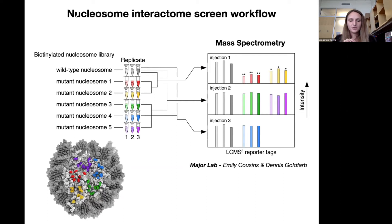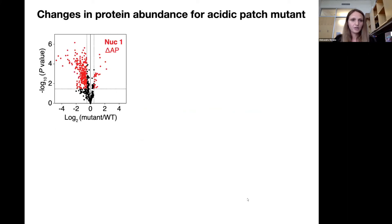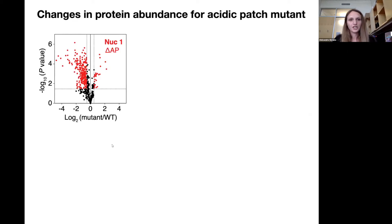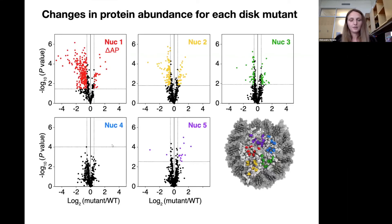Because there only exist 11 unique TMT tags and we had 18 samples, we had to divide them between three groups and label them separately, and then run each of these groups separately on the mass spectrometer. To be able to directly compare protein abundance between each of the nucleosome pull-downs, we included wild-type triplicate in each of the injections. To analyze this data, we compared the protein abundance between wild-type and mutant nucleosomes and plotted these differences on volcano plots. The x-axis represents log difference, the y-axis represents significance of that difference. This is the 5% false discovery rate threshold, and the vertical line indicates a 1.4-fold change cut-off. We conducted the same analysis for all the mutant nucleosomes.